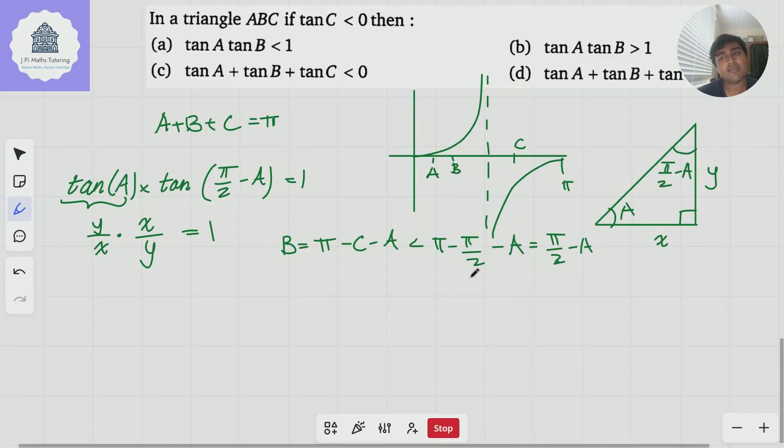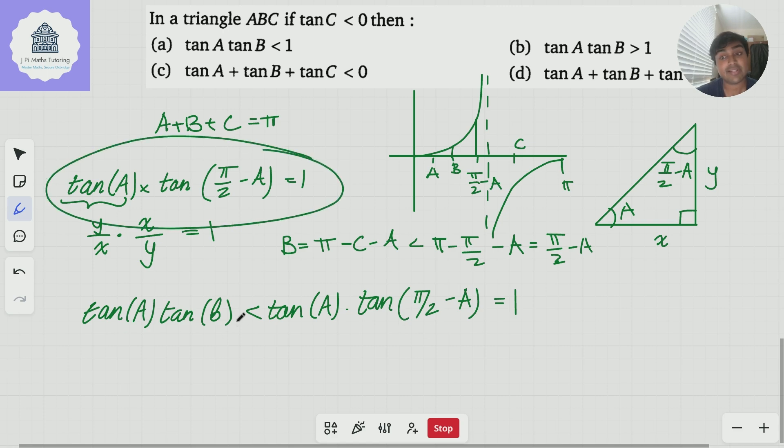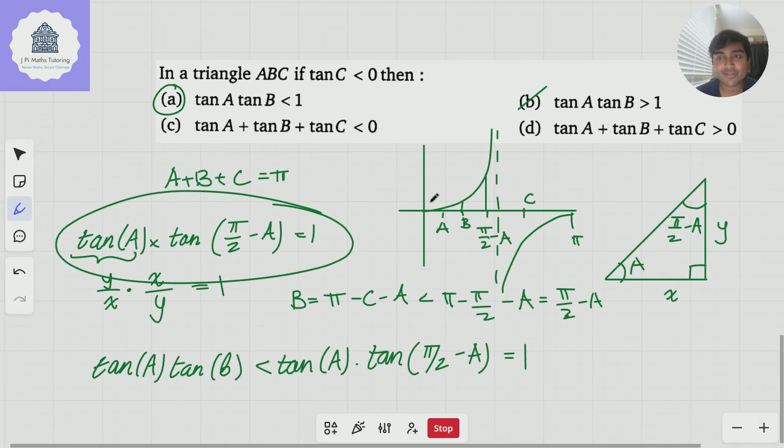But we can see here that since A is a positive angle and less than π/2, π/2 - A is going to be an acute angle as well. But clearly, tan of B is less than tan of π/2 - A. And so therefore, I know that tan(A) tan(B) is going to be less than tan(A) tan(π/2 - A). And we know from earlier that that is equal to 1. And so tan(A) tan(B) < 1. So option A is correct and option B is incorrect. Lovely.